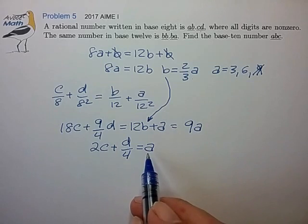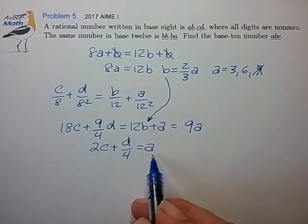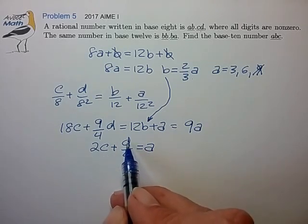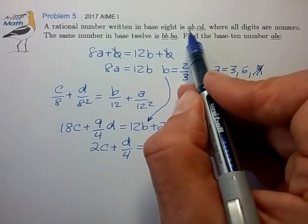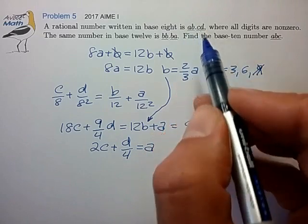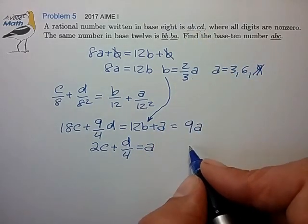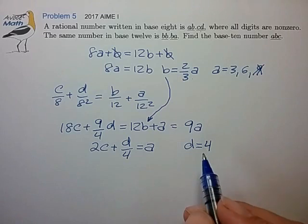So let's divide out by 9 to find that 2C plus D over 4 is equal to A. Okay, so that's really handy now because this is an integer, this is an integer, so that means D has to be a multiple of 4. It has to be less than 8 because it appears in a base 8 number. So that pretty much tells us now that D has to equal 4. Very handy.